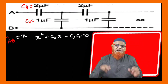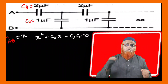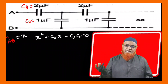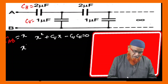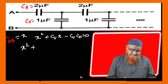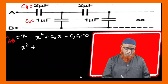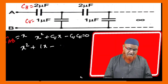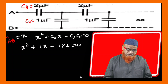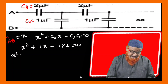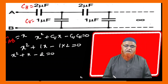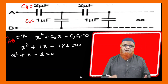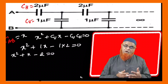This is the shortcut formula written in the form of a quadratic equation. Substituting values: C_vertical = 1 microfarad and C_horizontal = 2 microfarads, we get X squared plus 1·X minus 1·2 = 0, which simplifies to X squared plus X minus 2 = 0.